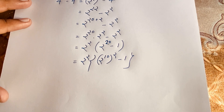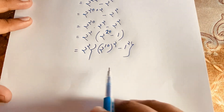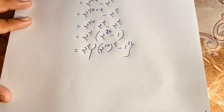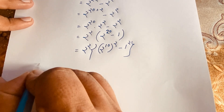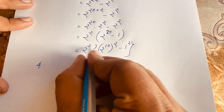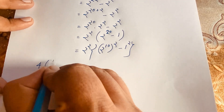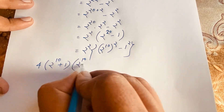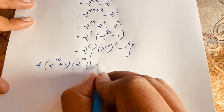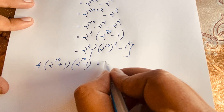Now, if I think of this as a squared minus b squared, using the formula a squared minus b squared equals a plus b times a minus b, where a is 2 to the power 10 and b is 1, the expression becomes 4 times 2 to the power 10 plus 1, times 2 to the power 10 minus 1.